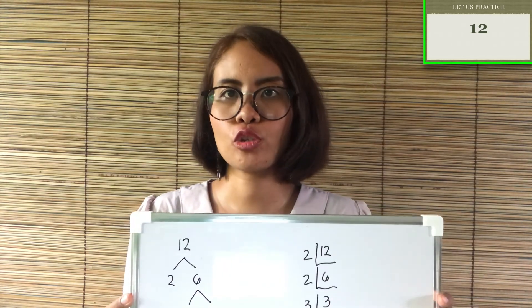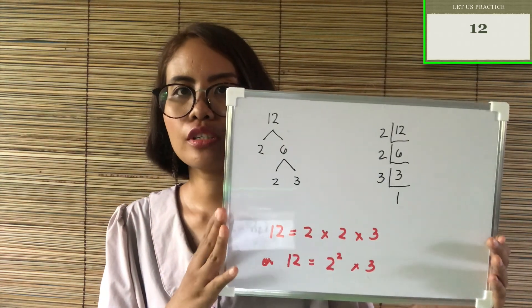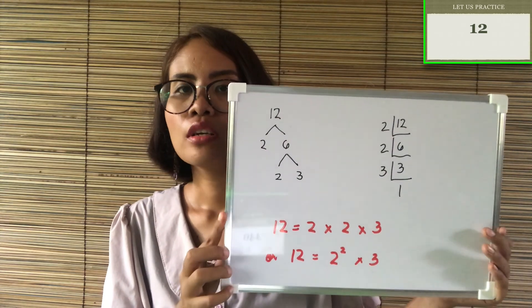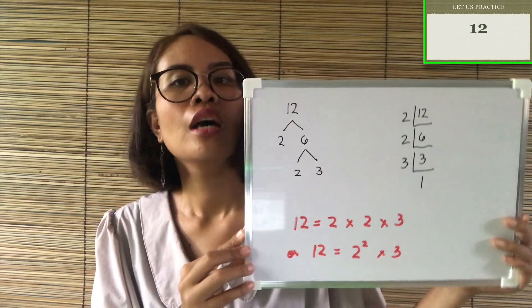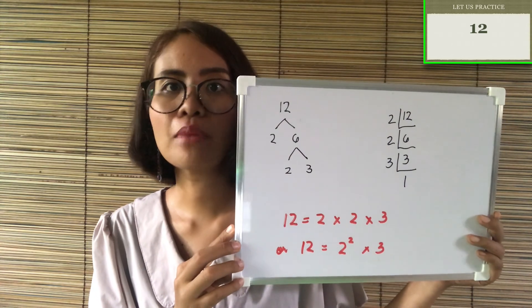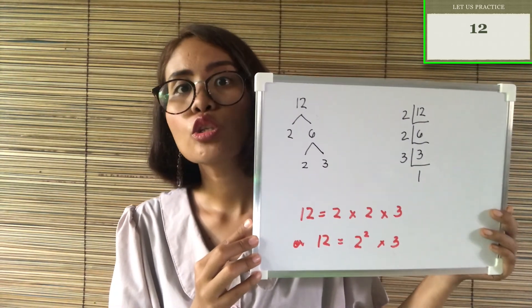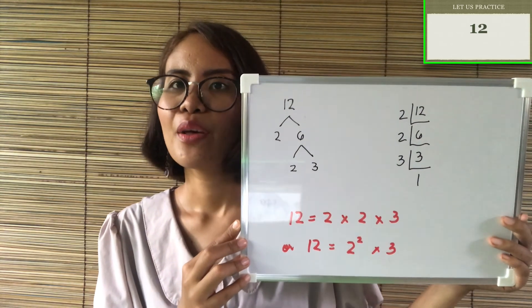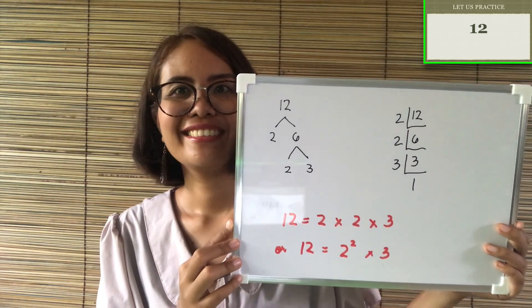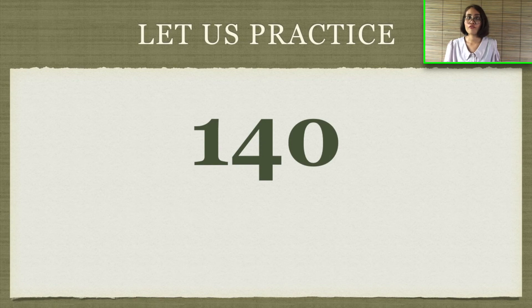Are you done? Here is the solution for 12, shown using both the factor tree and continuous division. Your answer should be 12 equals 2 times 2 times 3, or 12 equals 2 squared times 3.